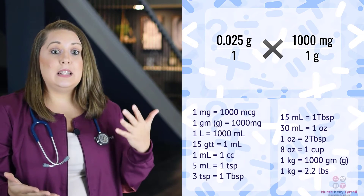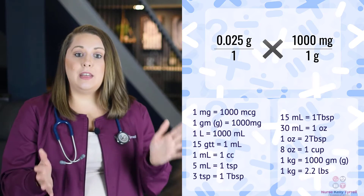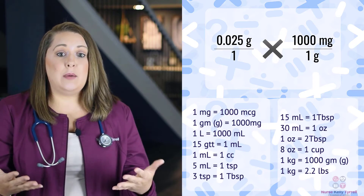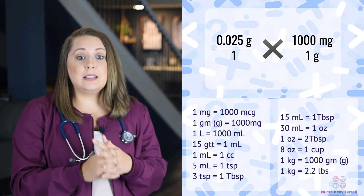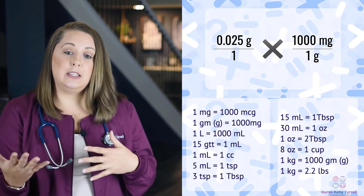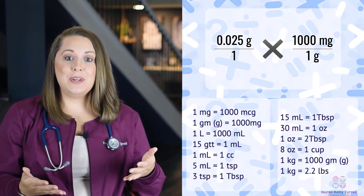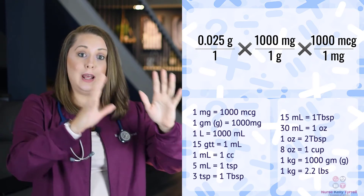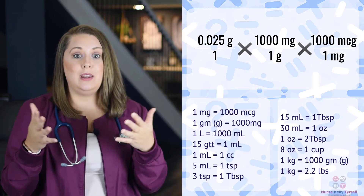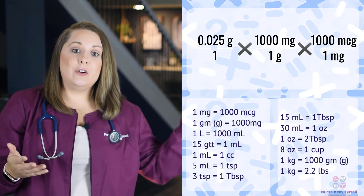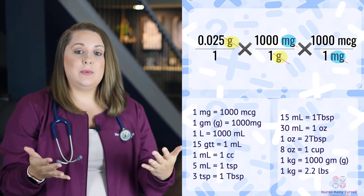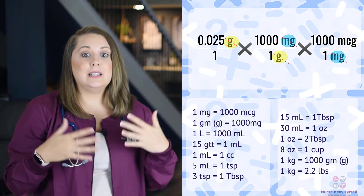Let's start by setting up this problem. We're going to take 0.025 grams over 1, times 1000 milligrams over 1 gram. Now if we left the problem like this it would be solving for milligrams, but we actually need to solve for micrograms. So we need to take it one step further and add 1000 micrograms over 1 milligram. See how I put the milligram units diagonal to each other? Now grams will cancel out as well as milligrams, leaving us with our desired unit — micrograms.